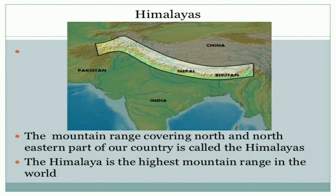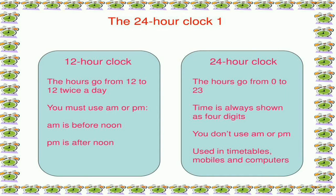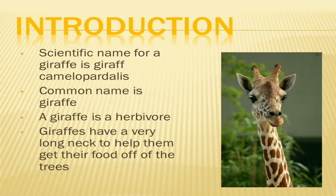Next we learned about the Himalayas: the highest mountain range in the world. Then we learned about the camel: it lives in the desert and likes to eat grass, wheat and oats. Then we learned about 24 hours: in a day we have 24 hours. Then we learned about the Giraffe: it has a long neck to help get food, and it is a herbivorous animal.